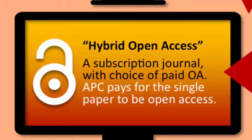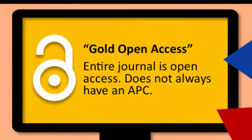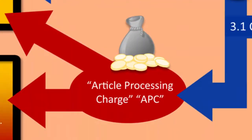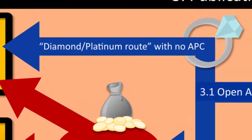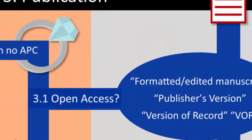Gold open access means that the entire journal is open access. As mentioned, some journals charge an APC to those publishing in these journals. However, there is also an alternative route to publishing in a gold open access journal when no APC is needed. This is known as the diamond or platinum route.